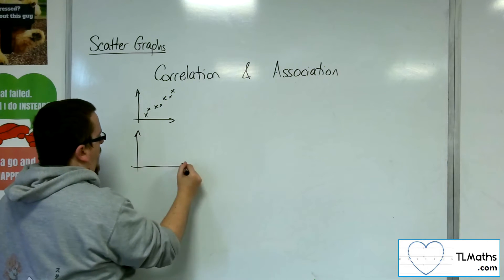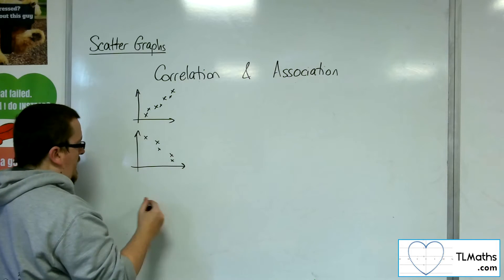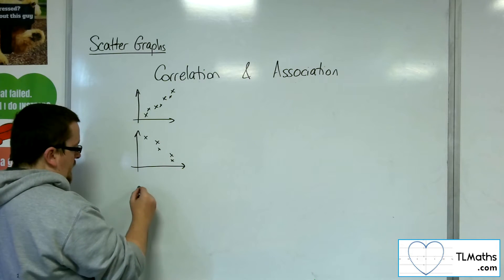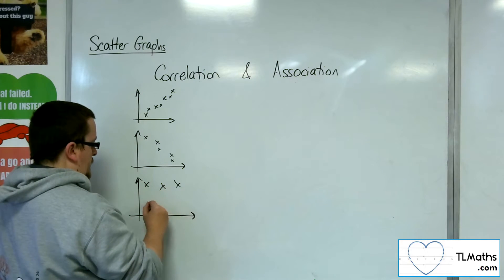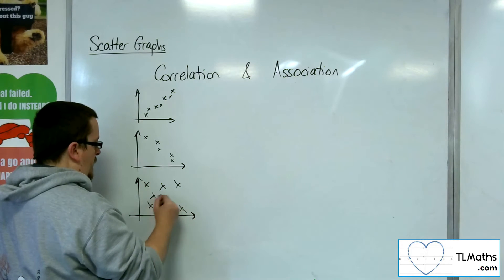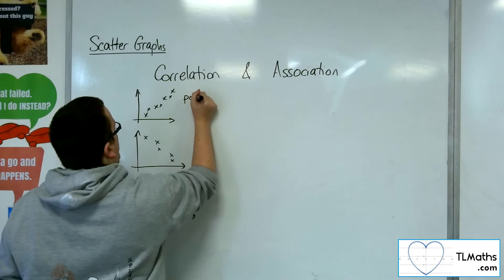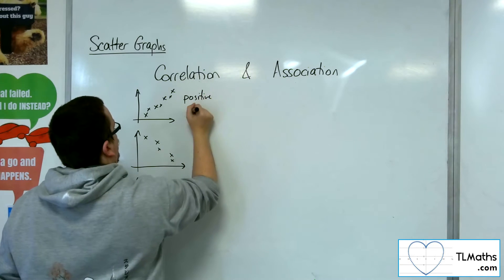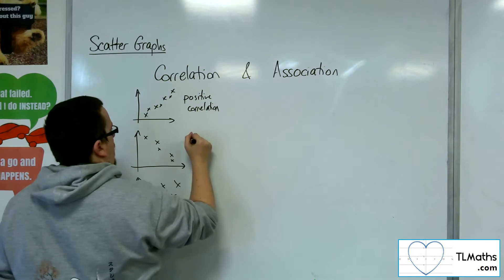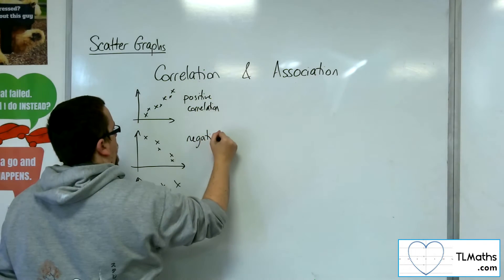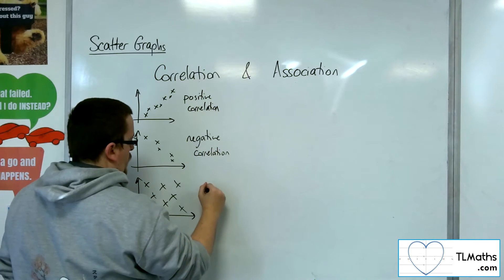Then you've got negative correlation — something looks like that, going from the top left to the bottom right. And then you've got no correlation, where the data is all over the place. So this would be positive correlation, negative correlation, and no correlation.